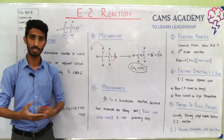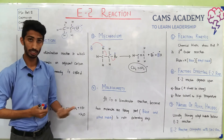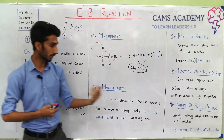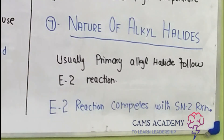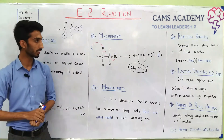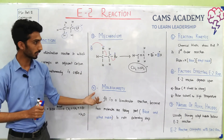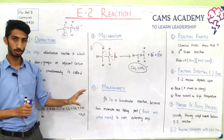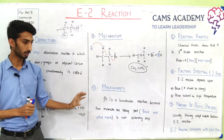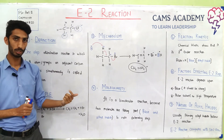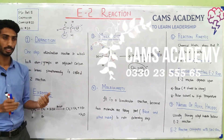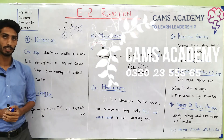Finally, which alkyl halides undergo E2? Alkyl halides are three types: primary, secondary, and tertiary. Primary alkyl halides can also give SN2 reactions, so E2 reactions compete with SN2 reactions in primary halides. SN2 is nucleophilic substitution whereas E2 is elimination. If you have any questions about this topic, you can ask in the comment section. Thanks for watching.